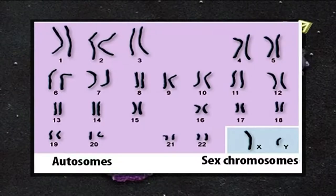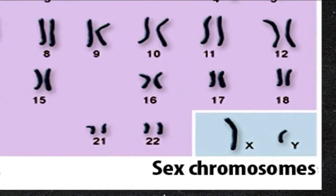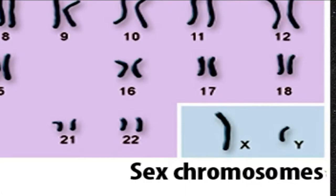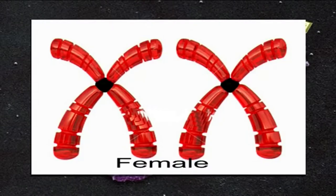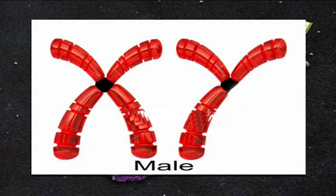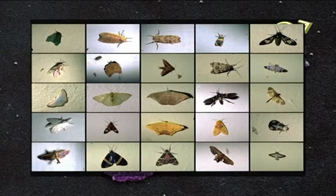In the human body, diploid cells have 46 chromosomes arranged in 23 homologous pairs. In humans, each diploid cell has two sex chromosomes that make up one of the 23 homologous pairs. The X chromosome is larger than the Y chromosome and therefore has spaces for genes that are not present on the Y chromosome. In humans and many other species, the sex chromosomes of females are identical — females have two X chromosomes, symbolized as XX. Males have one X chromosome and one Y chromosome, symbolized as XY.